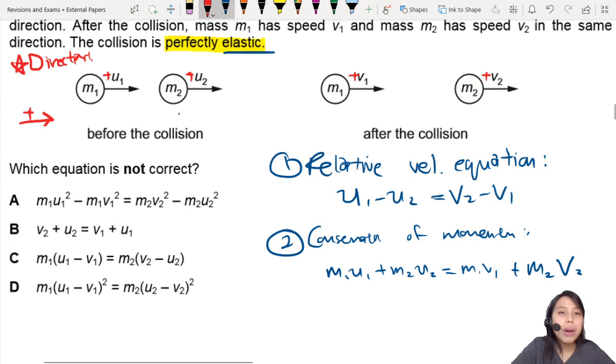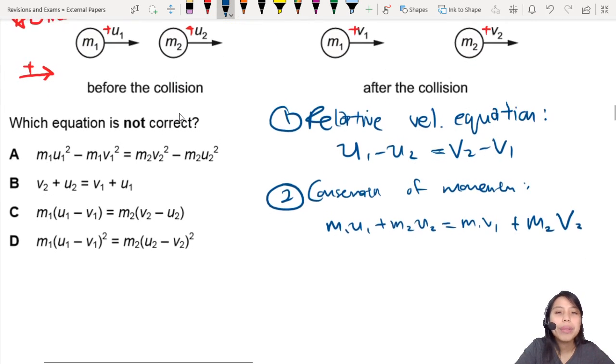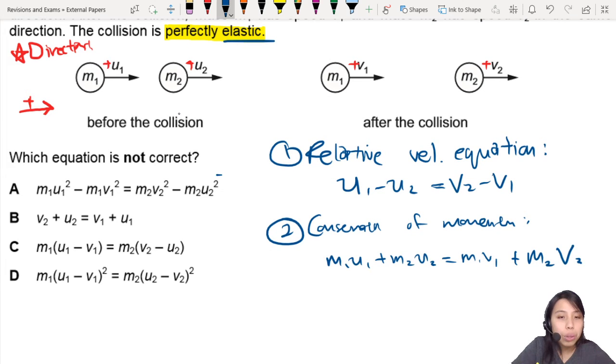So we need to check one by one which equation is correct, which one is not correct. Got one more equation. Why got square one? Oh, if you see got square, square, square, that means it's talking about kinetic energy. So let's make another equation down here. Conservation of KE.